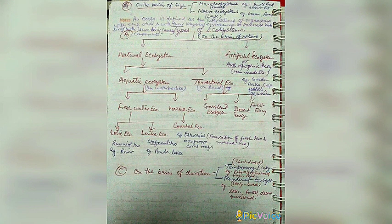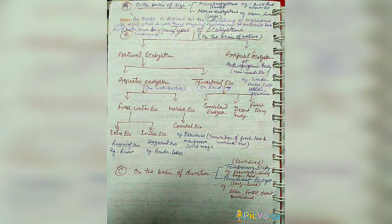On the basis of duration, ecosystems are divided into two parts. First, temporary ecosystem, meaning short-lived — examples include laboratory cultures of fungi and ponds. Second, permanent ecosystem, meaning long-lived — examples include lakes, forests, deserts, and grassland ecosystems.